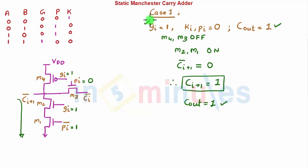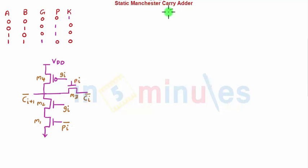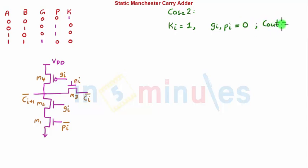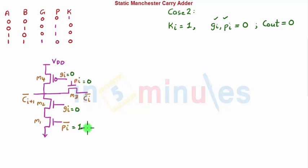Case 2: when the kill signal is 1, generate and propagate are both 0, and we want C-out to equal 0. There is no explicit kill signal input in this circuit, but functionality is still achieved through the generate and propagate signals. With GI equals 0 and PI equals 0, PI-bar is 1. In the pull-down network, M3 is off (NMOS with input 0) and M2 is also off, breaking the pull-down path even though M1 is on.